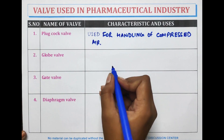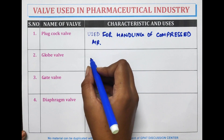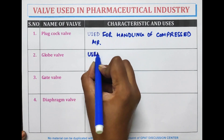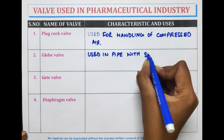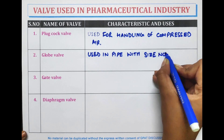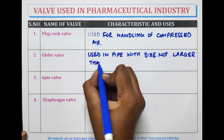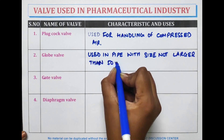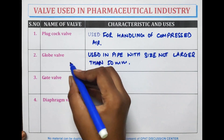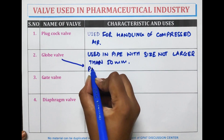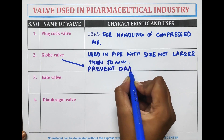Globe valves are used in pipes with a size not larger than 50 mm. In horizontal lines, these valves prevent drainage.